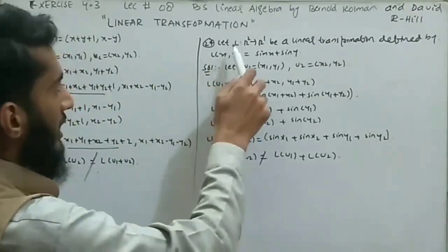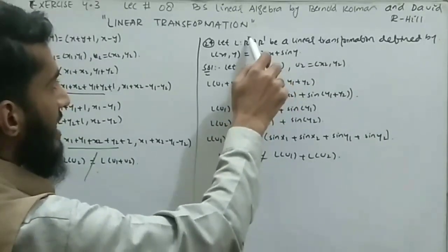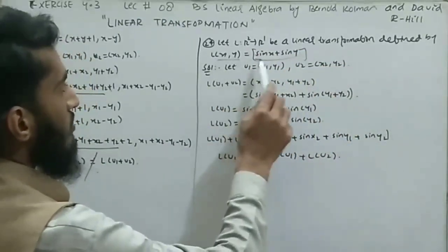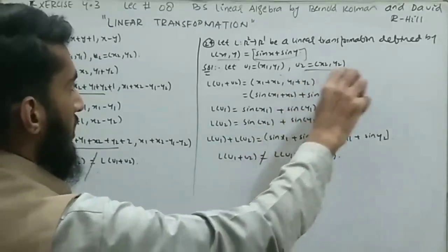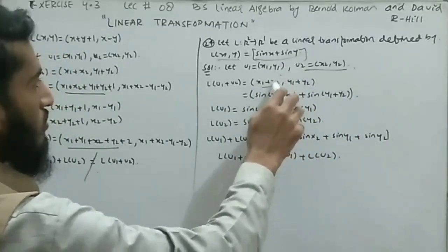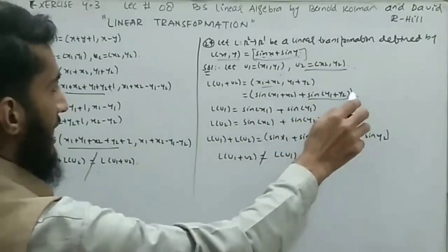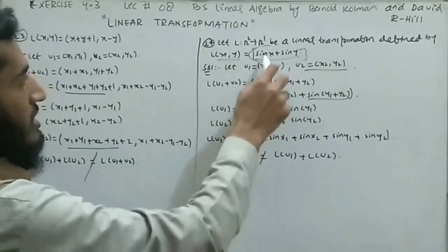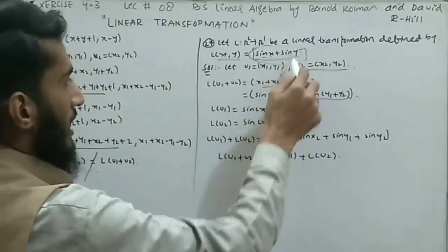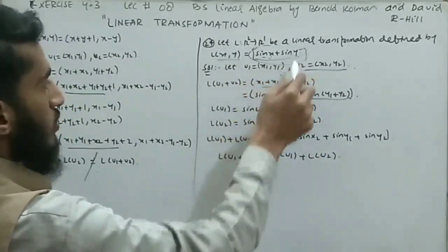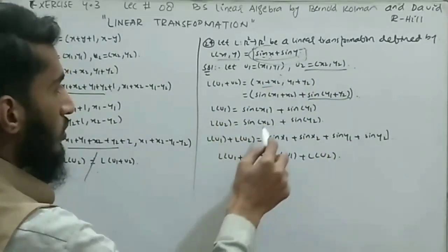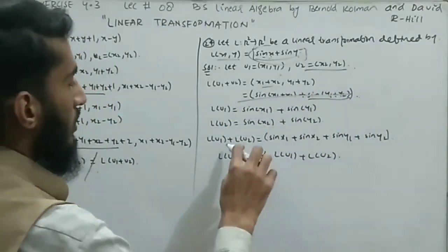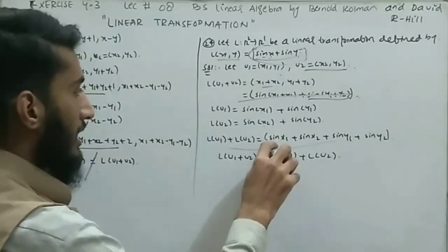Question 24: Let L be a linear transformation from R² to R¹ defined by L(x,y) = sin(x) + sin(y). Let u₁ = (x₁,y₁) and u₂ = (x₂,y₂). Then L(u₁+u₂) = sin(x₁+x₂) + sin(y₁+y₂), but L(u₁)+L(u₂) = sin(x₁)+sin(y₁)+sin(x₂)+sin(y₂). Since sin(x₁+x₂) ≠ sin(x₁)+sin(x₂) in general, these are not equal, so this does NOT satisfy the linear transformation condition.